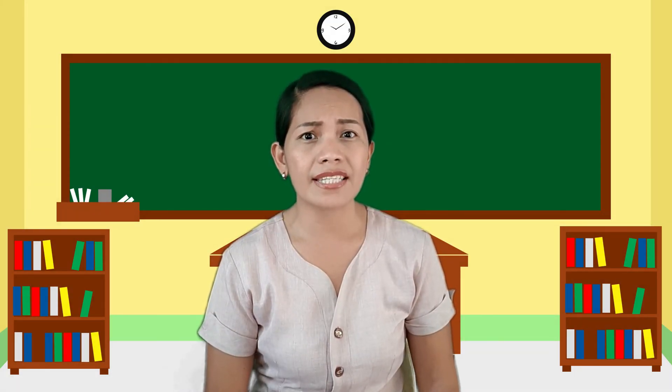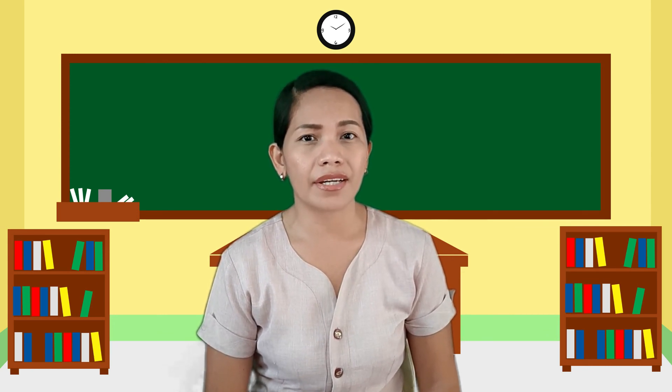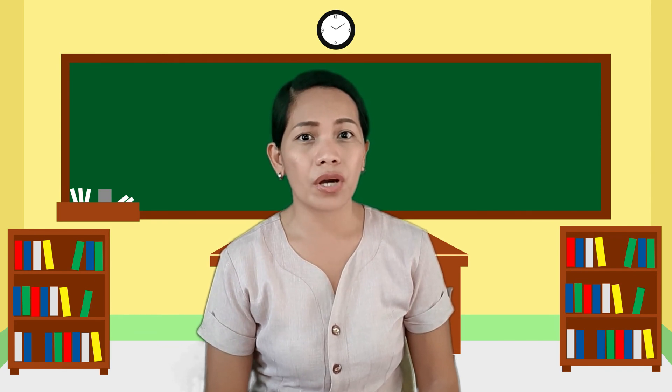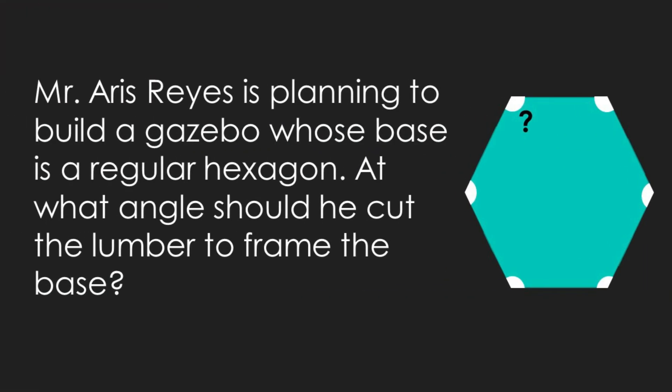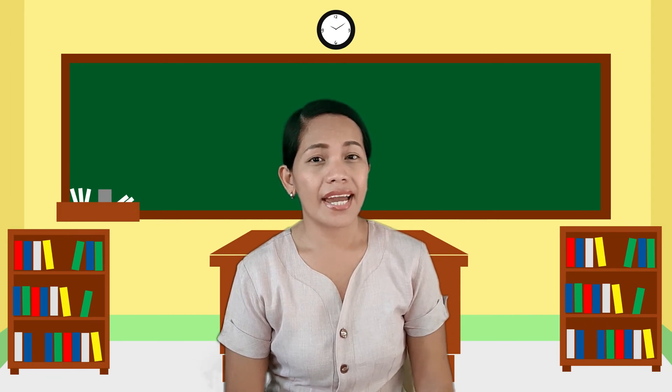The concepts we have learned in these lessons are very important in architecture. So, let's try to apply what we have learned by having this problem. A gazebo is something like this. And for this particular problem, the design of the gazebo must be hexagonal. So how should Mr. Aris cut the lumber so that the design would be a perfect and beautiful hexagonal gazebo?